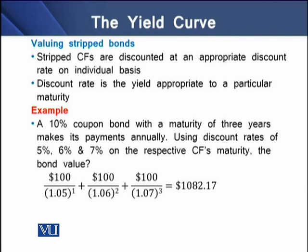Consider a 10% coupon bond with a maturity of 3 years making annual payments, using discount rates of 5%, 6%, and 7% on the respective cash flows at each maturity. The bond value is found by discounting the individual coupon cash flows: $100/(1.05) plus the coupon divided by the second year's discount rate plus the coupon divided by the third year's discount rate. Summing the discounted values of all three cash flows gives a total bond value of $1,082.17.